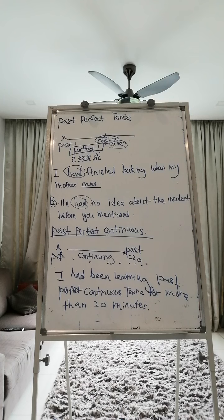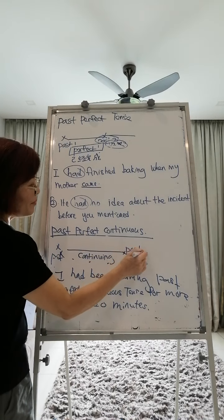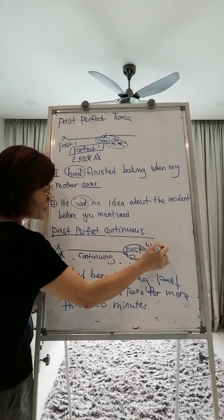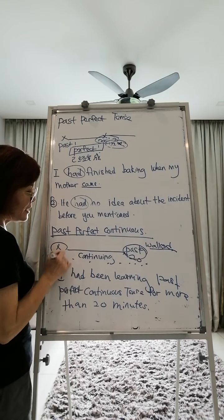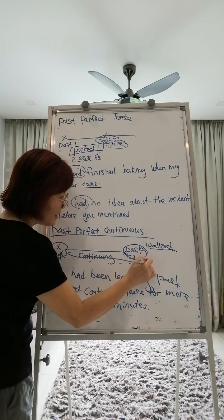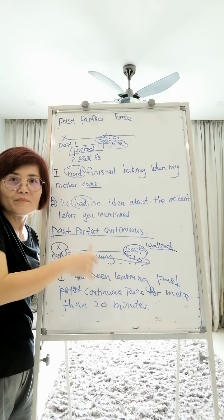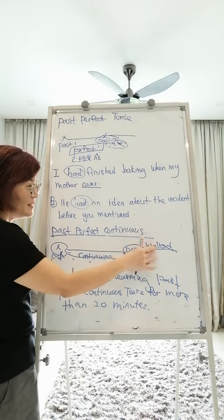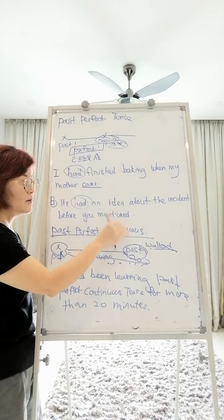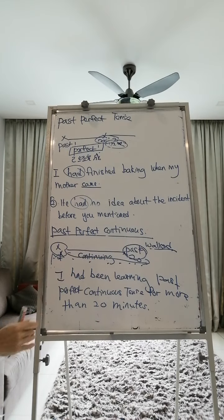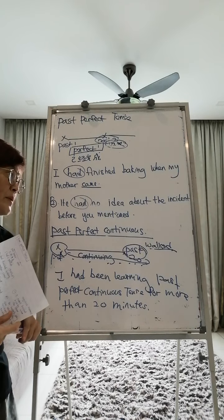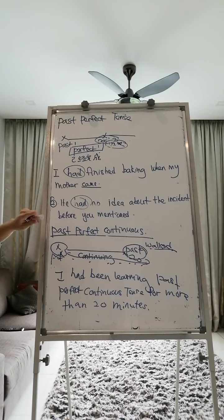Another example: 'I have been eating when mom walked into the room.' Mom walked into the room — that is the past point. Between this period of time, you have been eating. At the moment your mom walked in, you were still eating. So we say: 'I have been eating when mom walked into the room.' That is the past perfect continuous tense.